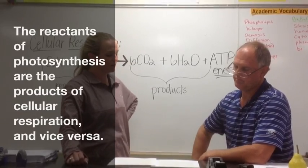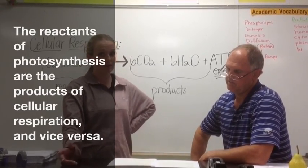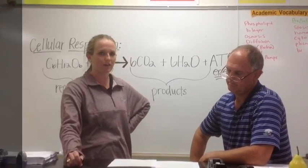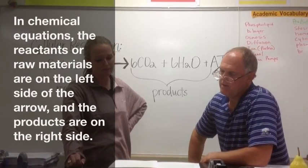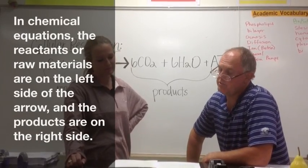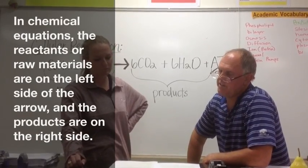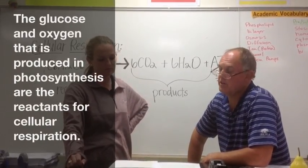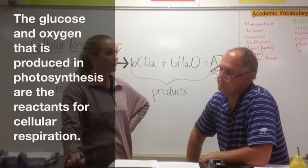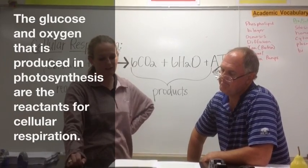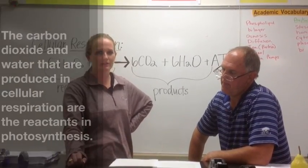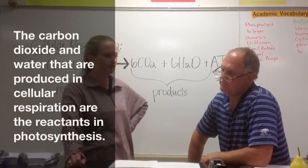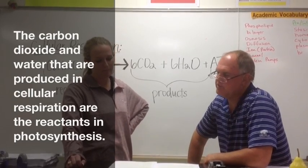In chemical equations, the reactants, or the raw materials, are on the left side of the arrow and the products are on the right. So the glucose and oxygen that are produced in photosynthesis are the reactants for cellular respiration. And the carbon dioxide and water that are produced in cellular respiration are the reactants in photosynthesis.